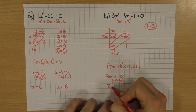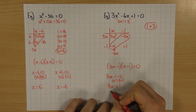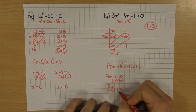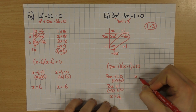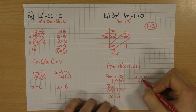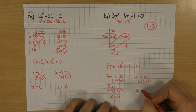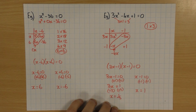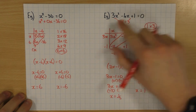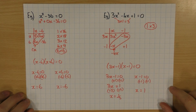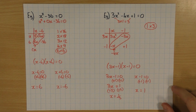Setting each bracket equal to zero: 3x minus 1 equals zero, so plus 1 to both sides gives 3x equals 1, then divide by 3, so x equals 1 third. And x minus 1 equals zero, so plus 1 to both sides gives x equals 1. So just a few examples of how to solve quadratics via factorising. Make sure it's equal to zero - if it's not, rearrange it so it is. Then factorise it. Then set each bracket equal to zero and solve to find your solutions. Thanks for watching, hope it helps.